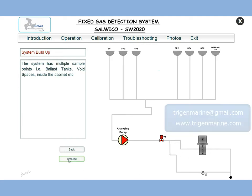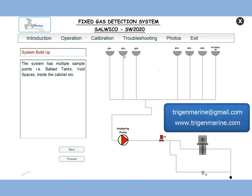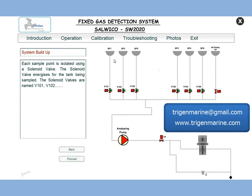On a ship you will not have one sample point but a number of sample points, so we have added a few sample points. Since we need to take a sample one at a time from each sample point, we have solenoid valves on each line. When the system is actually running, one of them will open and the sample would be taken from there, then the next would be opened.